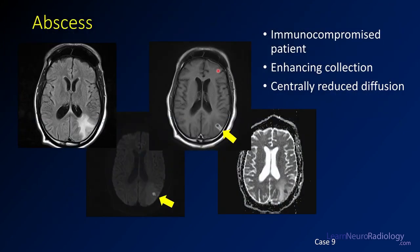This is a case of a pyogenic abscess. You have a peripherally enhancing fluid collection in the parietal lobe that is centrally non-enhancing or necrotic, with a lot of surrounding edema on FLAIR. The key finding is that on diffusion it is abnormally bright, and on ADC it is dark — in the area of non-enhancement. That central area of pus has high-viscosity material that restricts diffusion. Toxoplasmosis and cysticercosis typically do not have reduced diffusion. Lymphoma with reduced diffusion is usually in the area of enhancement.